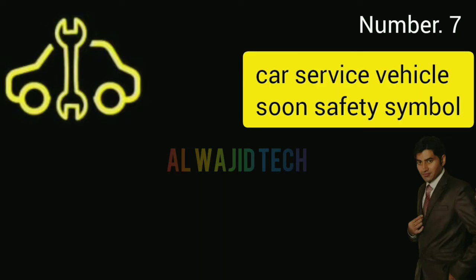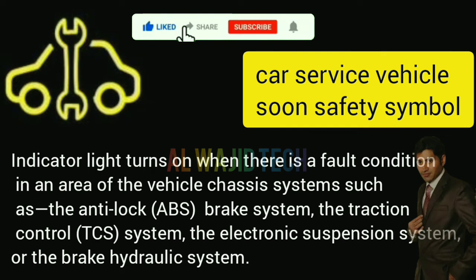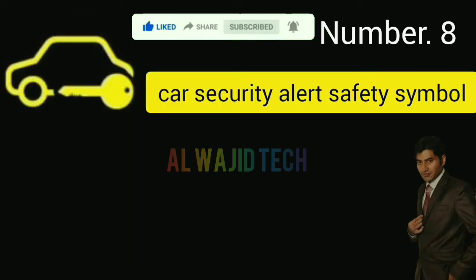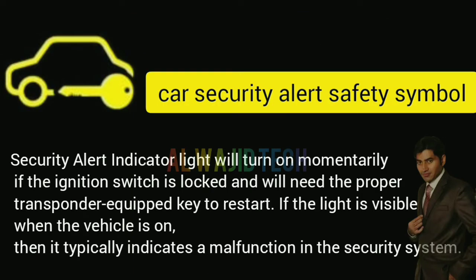Number seven: Car service vehicle soon. The service vehicle soon indicator turns on when there is a fault condition in an area of the vehicle chassis system, such as the anti-lock ABS brake system, the traction control TCS system, the electronic suspension system, or the brake hydraulic system.